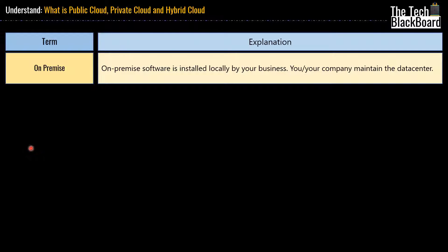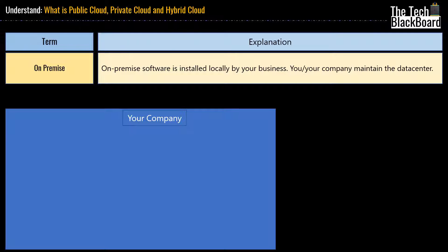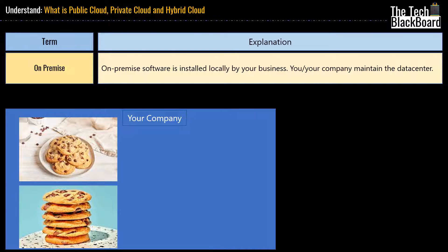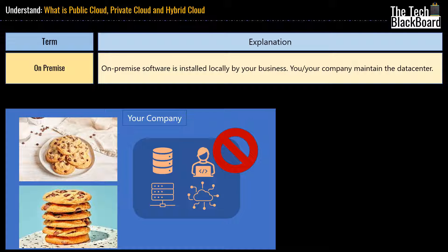What was the problem then? If everything was in such control, why did we ever move to cloud? The answer is: with great power comes great responsibility — you were responsible for everything. Let's say you are a big company selling cookies, like sunnycookies.com. You want to sell cookies but you don't want to maintain big servers, network, install patches, or maintain dedicated employees. That's not your forte — you just want to sell cookies.